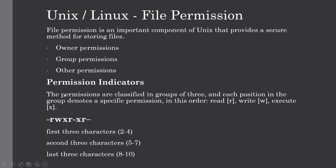Here is the example we will discuss. The first three characters, positions 2 to 4 — r, w, and x — represent the permission for the file owner. The second group of three characters, positions 5 to 7, consists of the permission for the group to which the file belongs. And the last three characters represent the permission for everyone else.